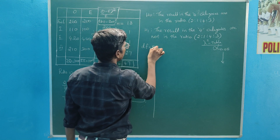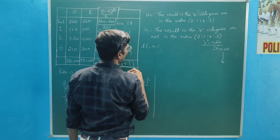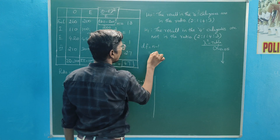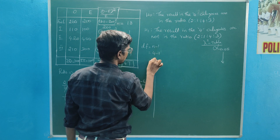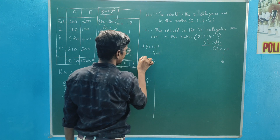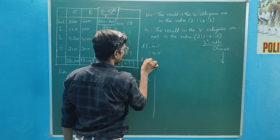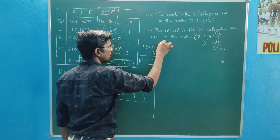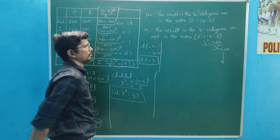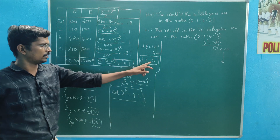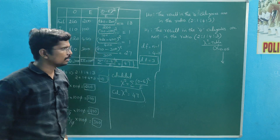For n minus 1: 4 minus 1 equal to 3. Degrees of freedom equal to 3.